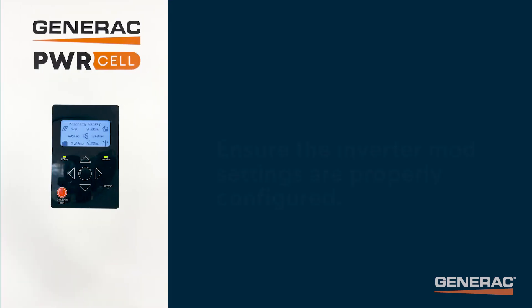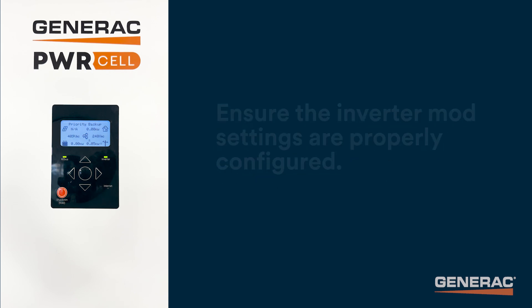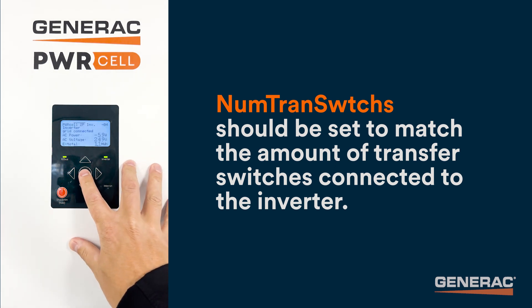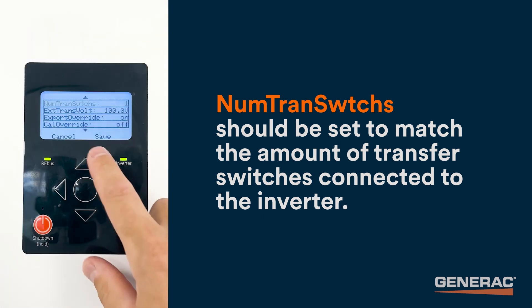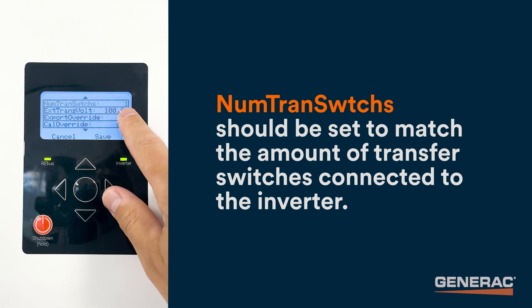First, let's ensure that the inverter mod settings are properly configured. The setpoint num trans switch should be set to match the amount of transfer switches connected to the inverter, not necessarily the number of ATSs on site. In this case, we can see that num trans switch is set to one.